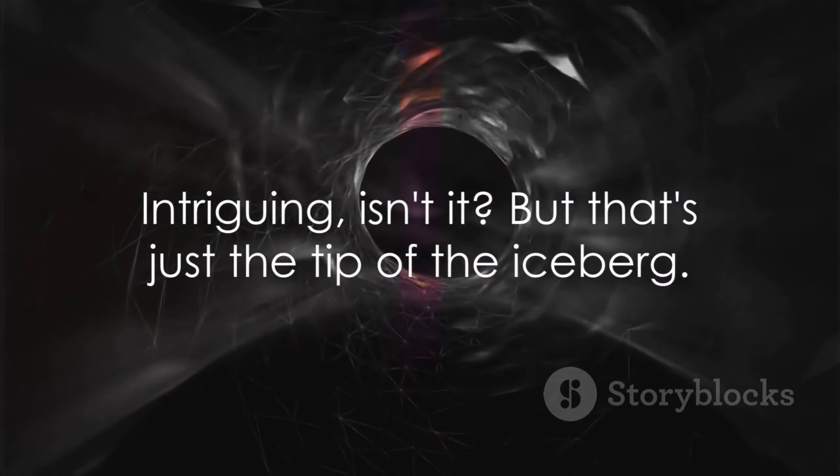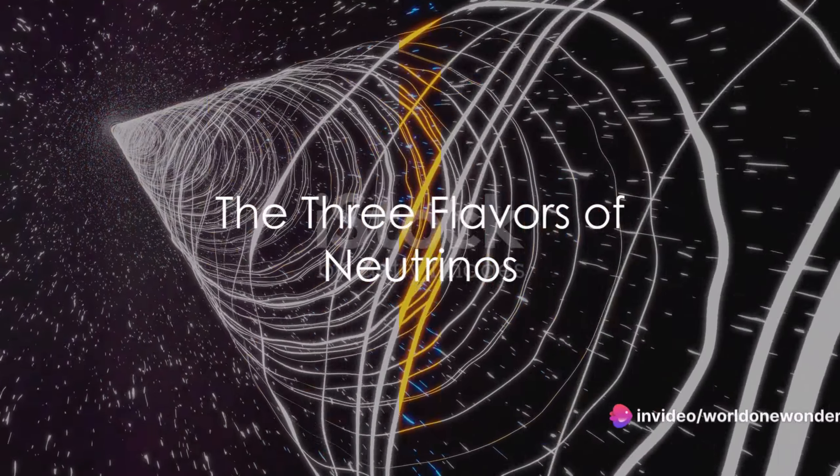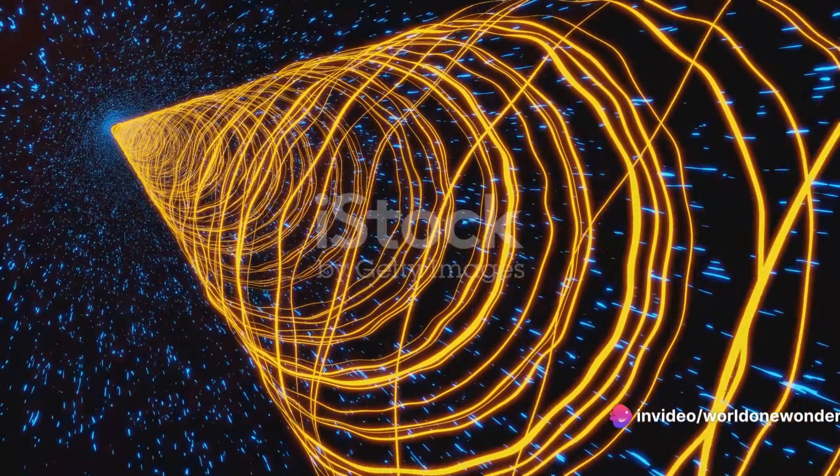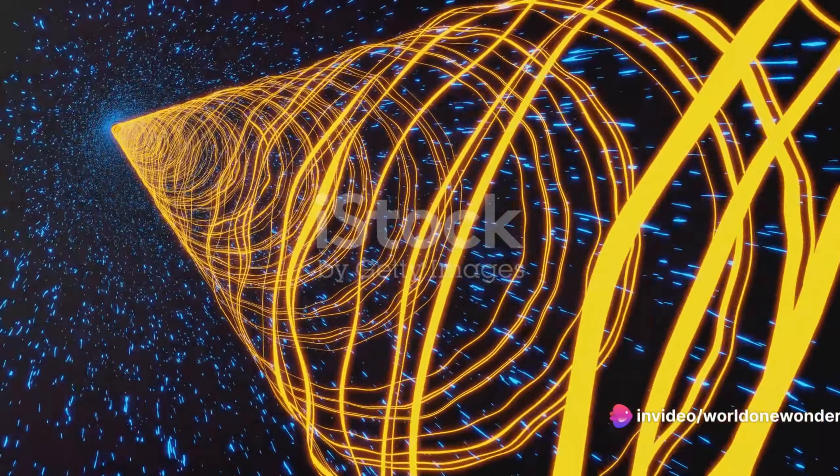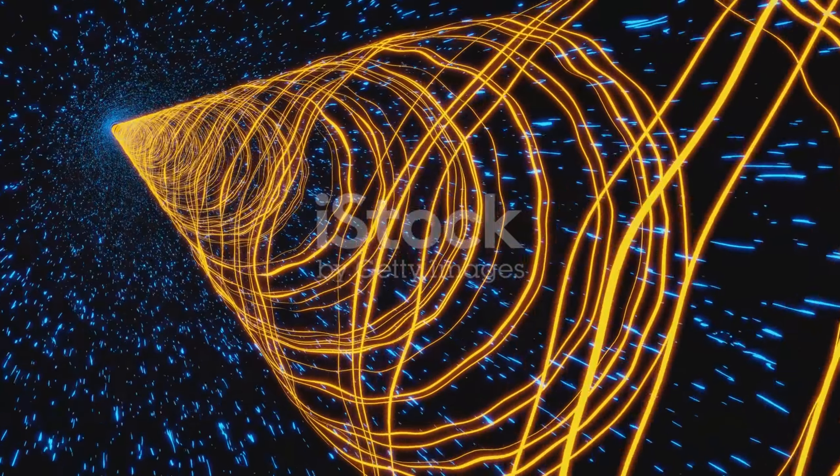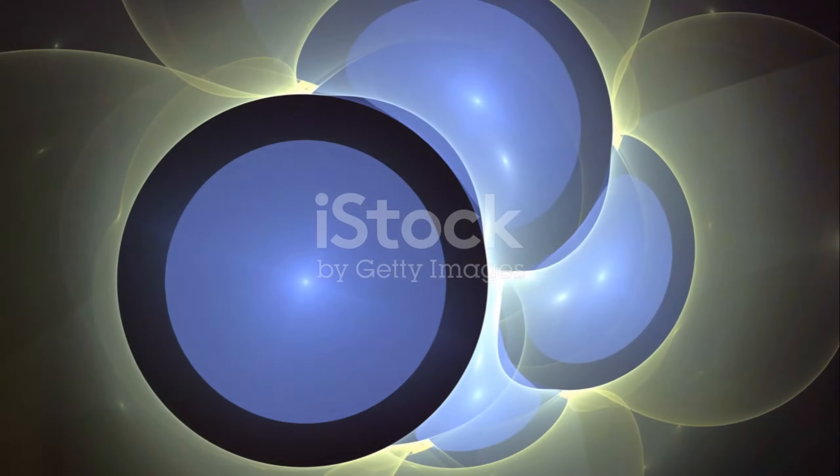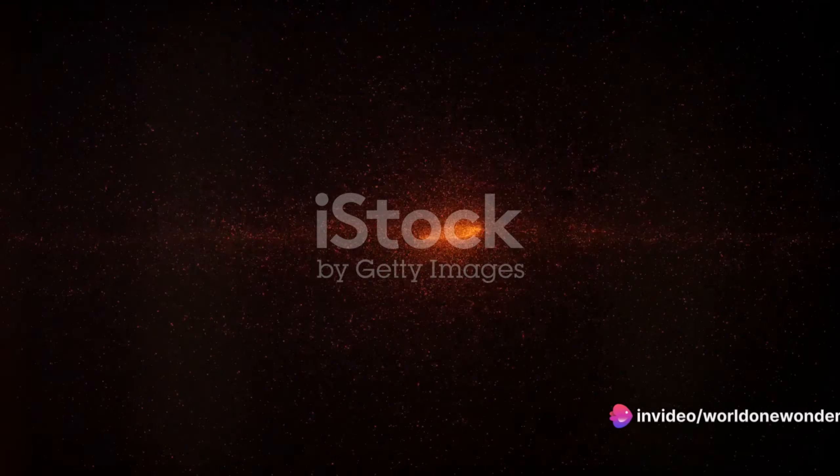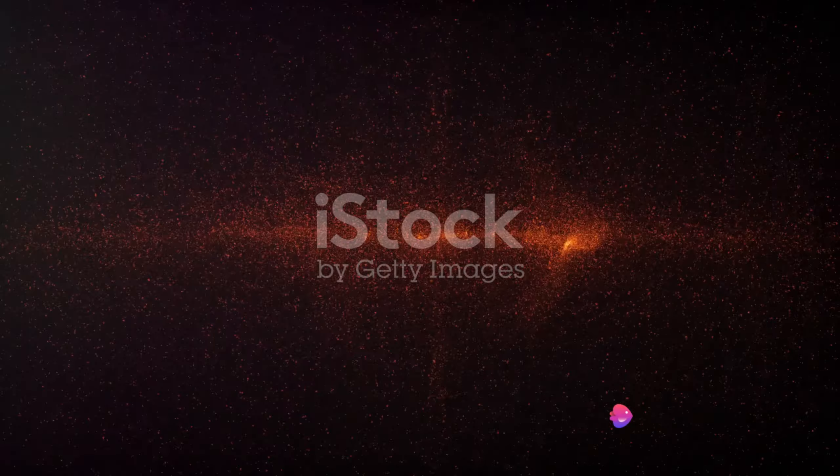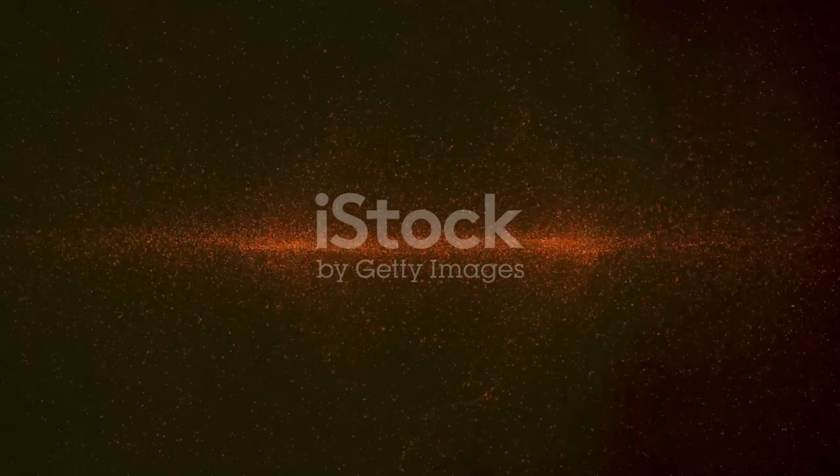Intriguing, isn't it? But that's just the tip of the iceberg. Did you know that neutrinos come in three different flavors? Indeed, these subatomic particles, as elusive as they are, actually come in three distinct types, or as scientists like to call them, flavors. These are the electron neutrinos, muon neutrinos, and tau neutrinos. Each of these neutrinos has a corresponding partner particle in the lepton family. Electron neutrinos partner with electrons, muon neutrinos with muons, and tau neutrinos with taus.